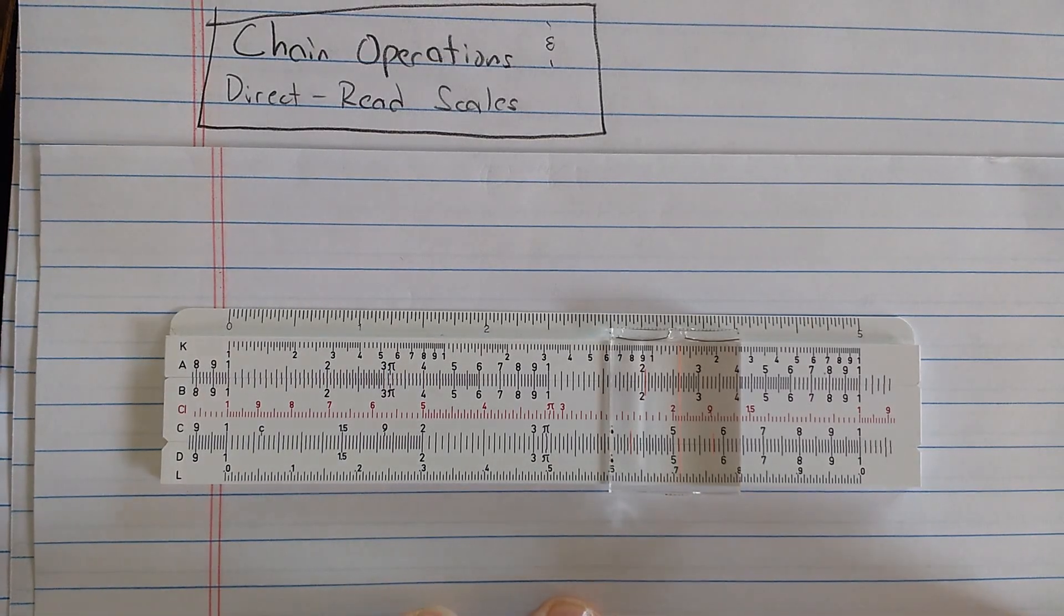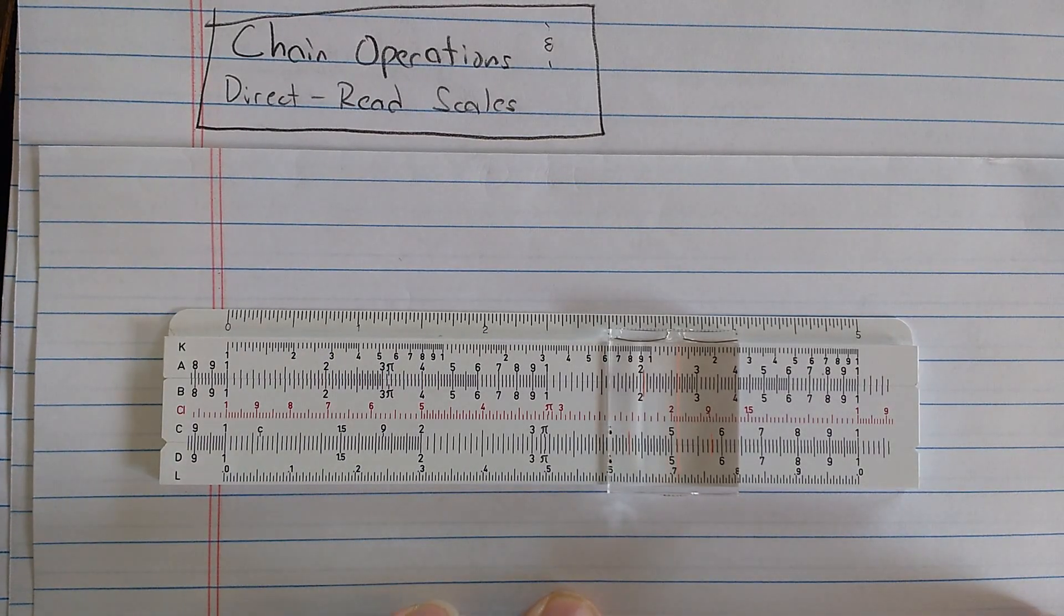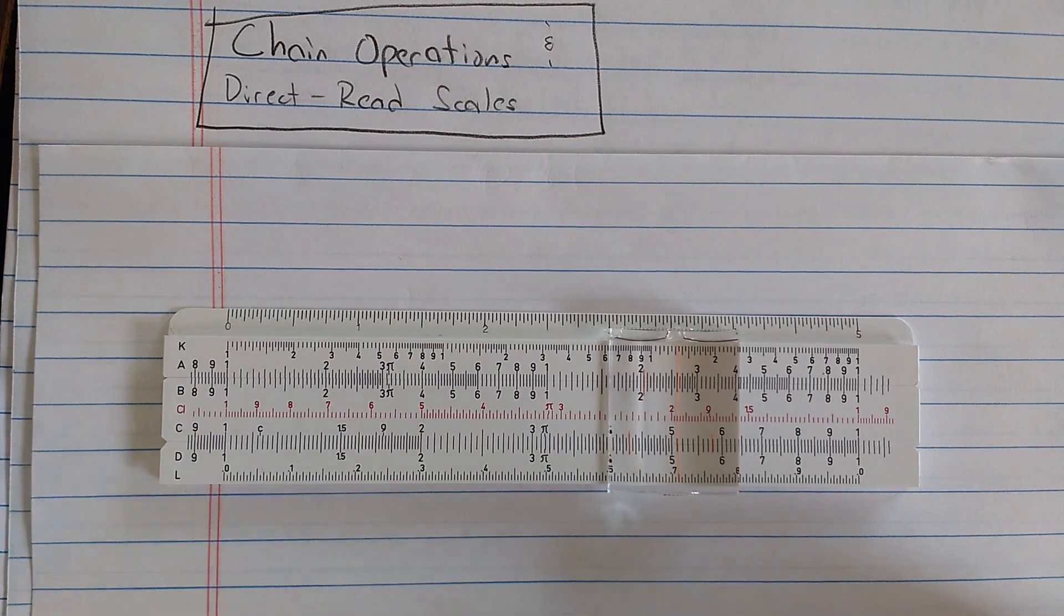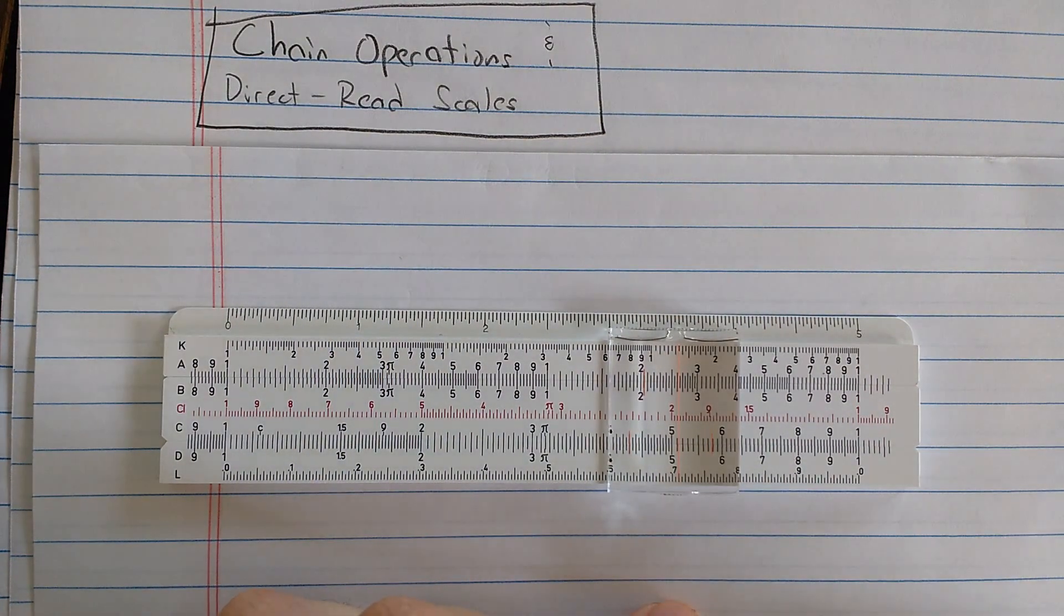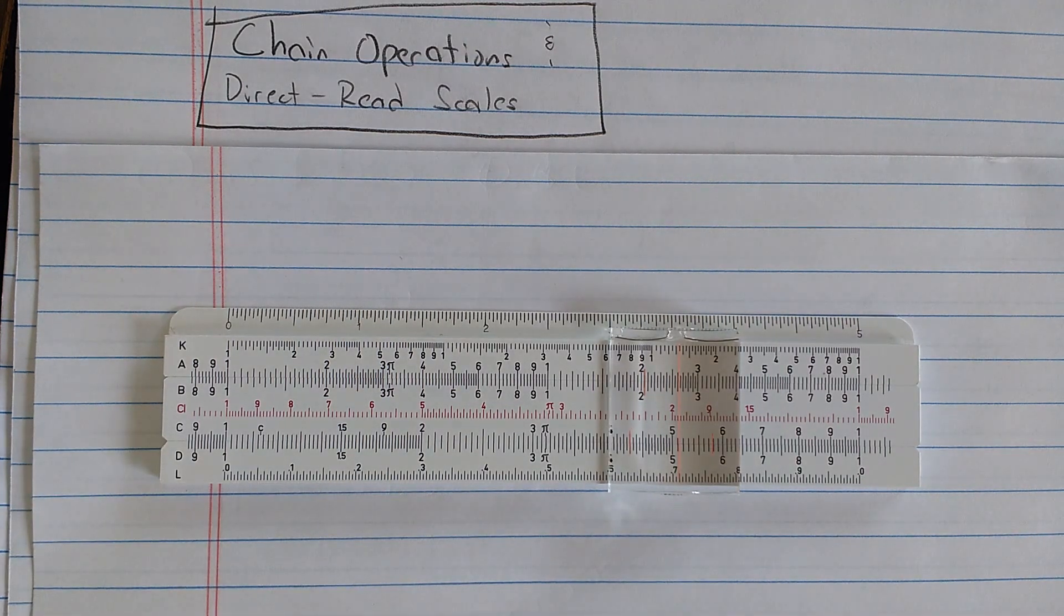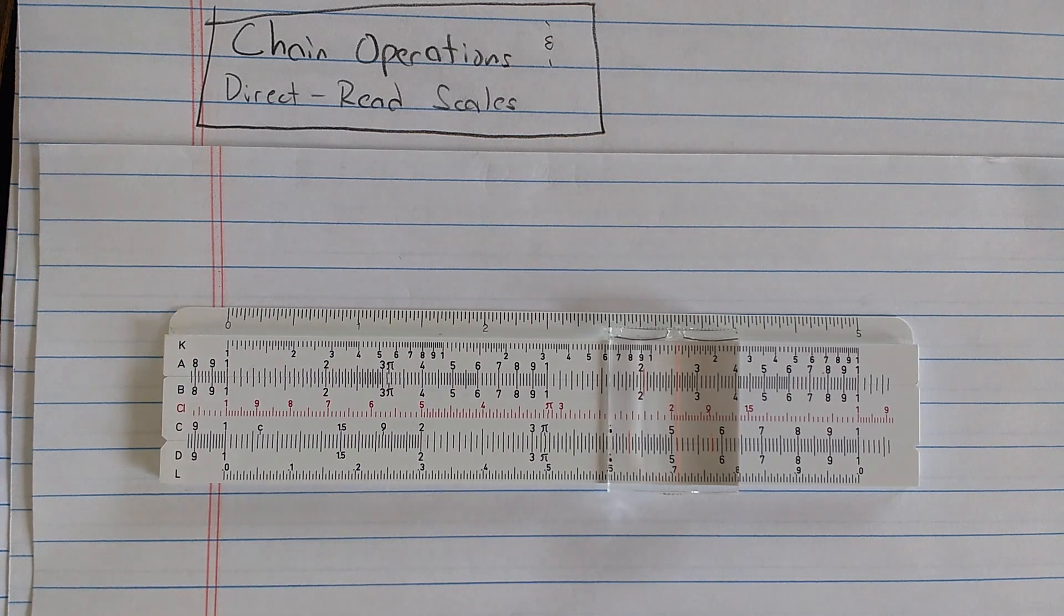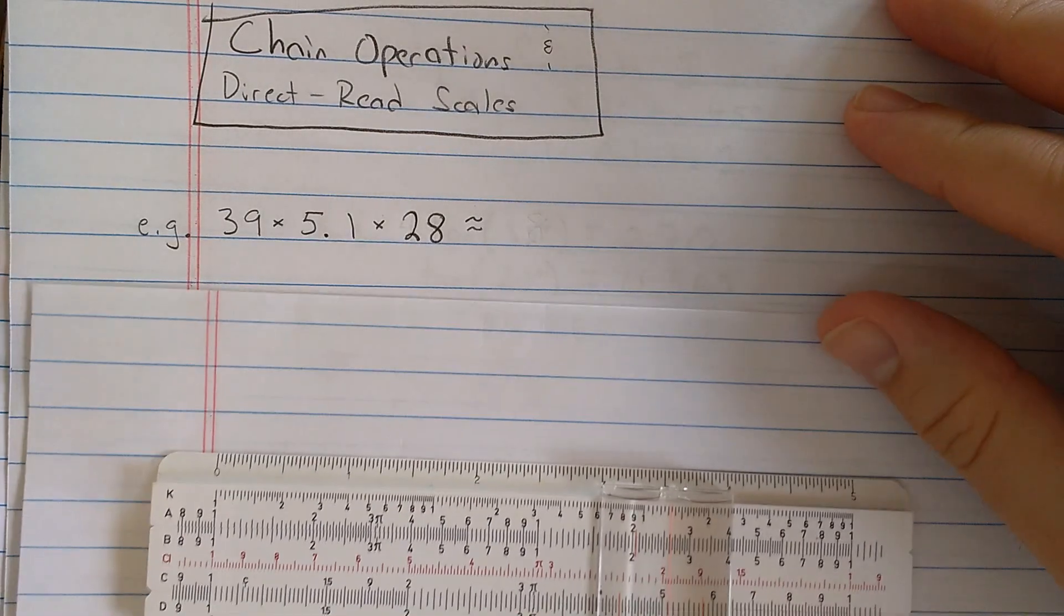Welcome back. This will be the final video on basic slide rule use. We'll talk about chain operations, what I'm going to call the direct reading scales, and this is going to include, finally, the trigonometry scales. Let's get started.